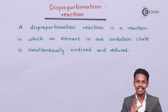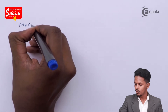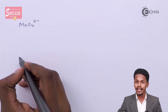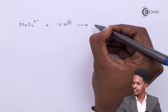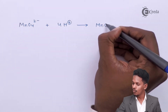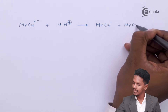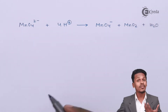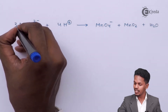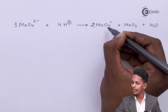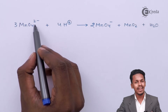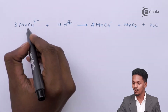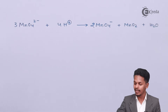Based on that we have certain examples. If we consider MnO₄²⁻, that is the manganate ion, when it undergoes a reaction in an acidic medium, the products we get are MnO₄⁻ along with MnO₂. To balance the reaction, we use 3 moles of MnO₄²⁻ and get 2 moles of MnO₄⁻. The oxidation state of Mn in MnO₄²⁻ is found to be +6.